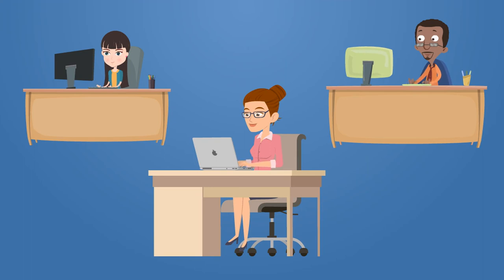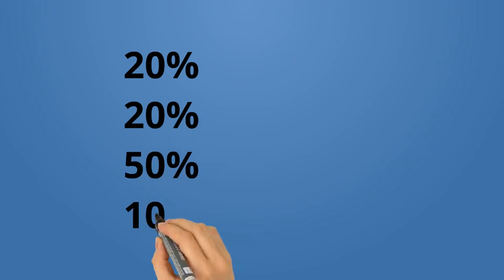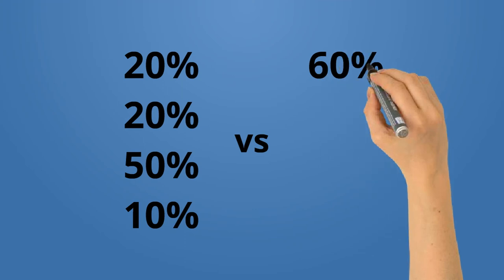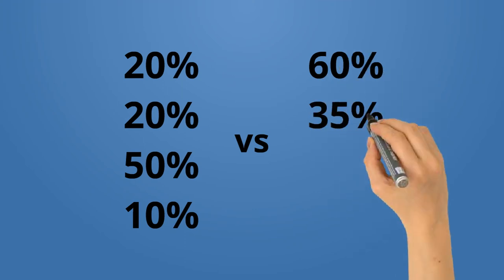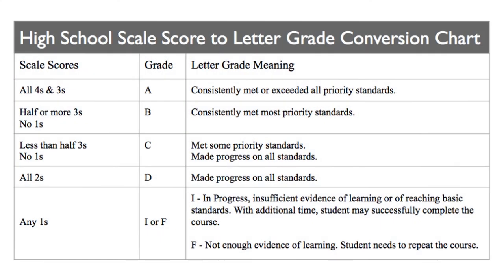In a traditional grading system, different classes often have different formulas for calculating grades. In one class, tests may count for 20%, quizzes for 20%, homework for 50%, class participation for 10%. In another class, tests and quizzes may be a total of 60%, homework 35%, and participation 5%. Teachers using our proficiency-based grading system will all use the same formula to calculate end-of-course letter grades.